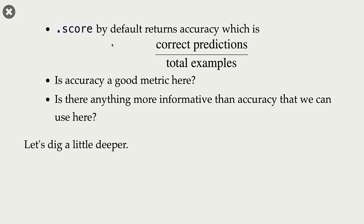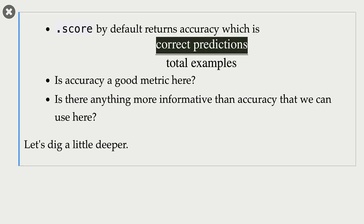When we call score in scikit-learn, by default, it returns accuracy. What is accuracy? Accuracy is correct predictions over total examples. And these correct predictions also include non-fraudulent transactions in our case. So the question is, for these kinds of problems, is accuracy a good metric? Is there anything more informative than accuracy that can be used here? In this lecture, we are going to look at this issue.